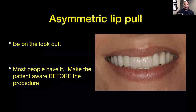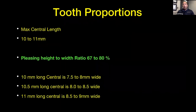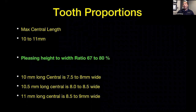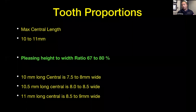As far as tooth proportions go, maxillary central incisors should be between 10 and 11 millimeters on average — some people like 12 millimeters, but most would agree 10 to 11 millimeters is a good length. As far as the width-to-height ratio, it should be 67 to 80%. So if you have a 10 millimeter long central, the average width should be about seven and a half to eight millimeters wide. One good way to visualize this is to pull out your credit card — it's basically the proportion of a credit card.